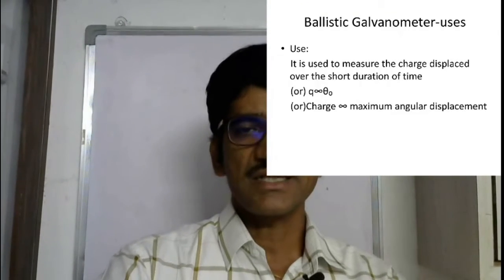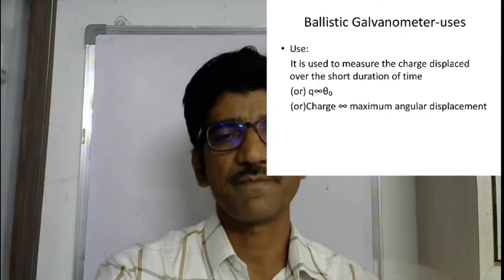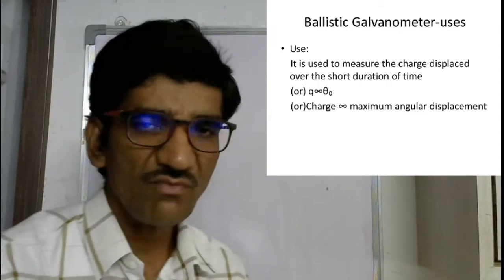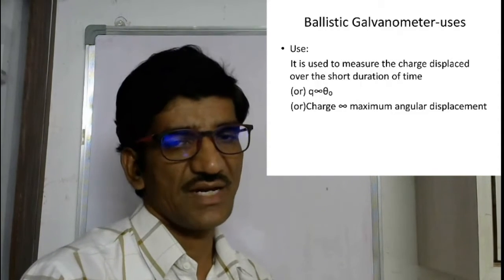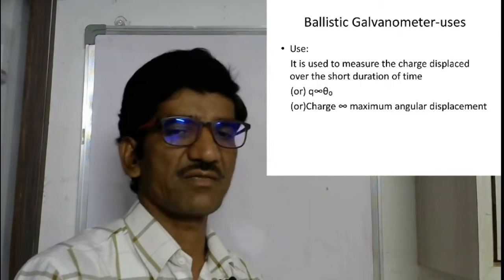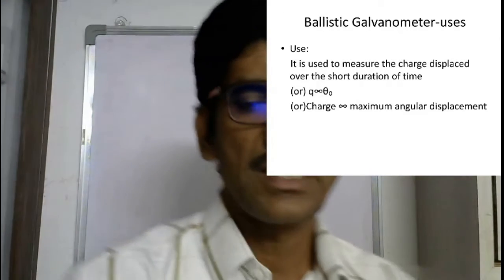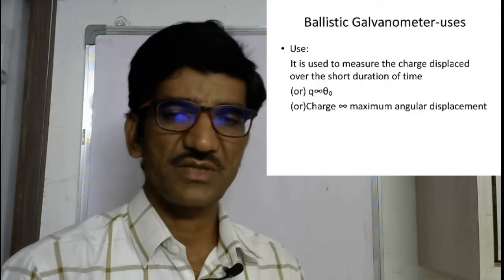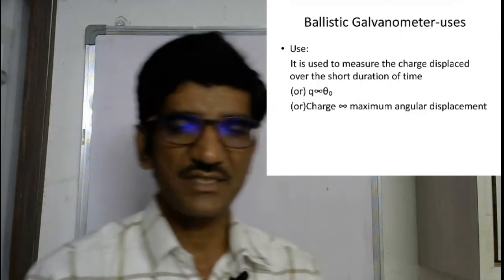How do you measure the charge flowing through the circuit? You note down the deflection in the ballistic galvanometer and directly relate this deflection of the rectangular coil to the charge flowing through that instrument or circuit. The charge flowing through this meter is directly proportional to the deflection of the rectangular coil placed inside the ballistic galvanometer.